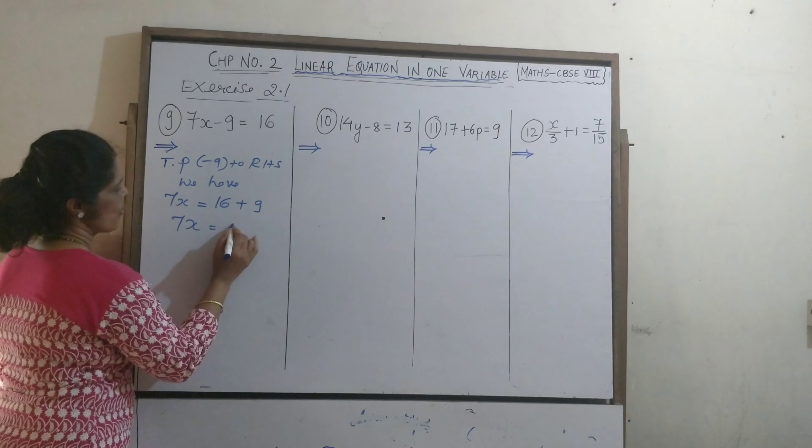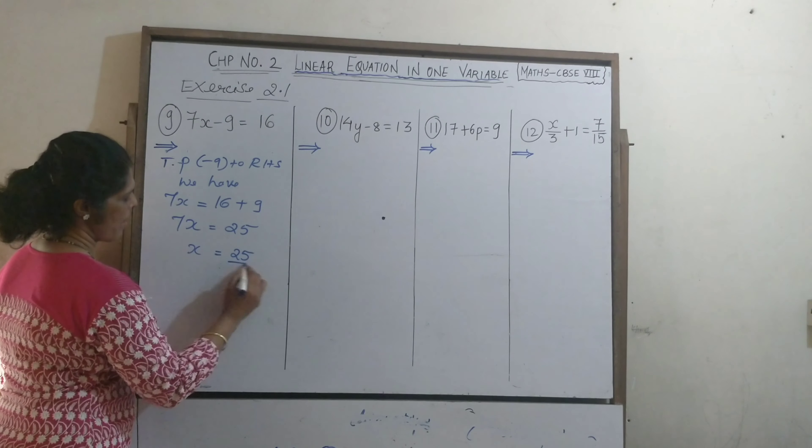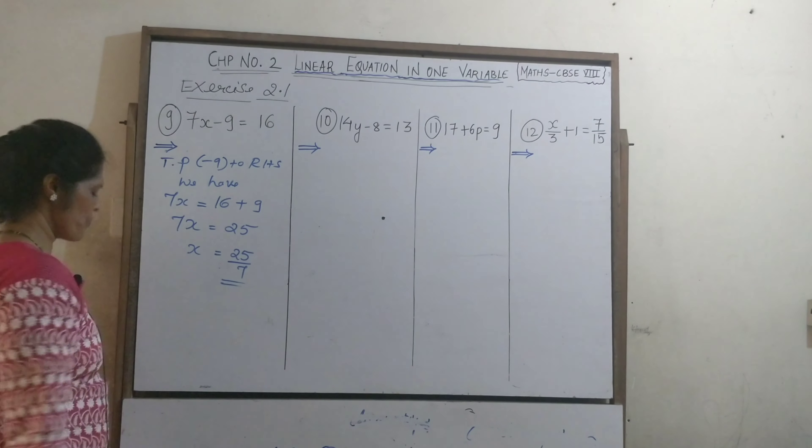That means 7x is equal to 25, x is equal to 25 upon 7. This is your answer.